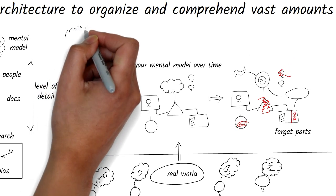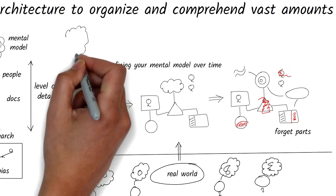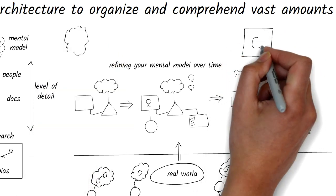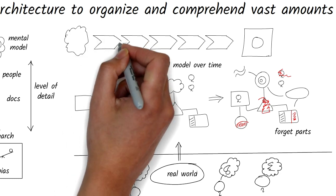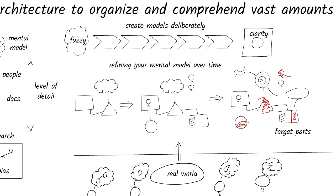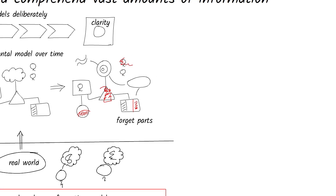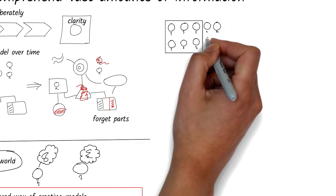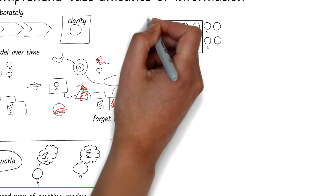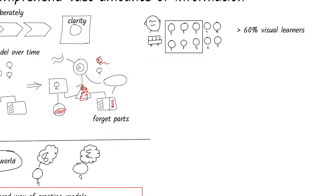What if there was a deliberate way to create these mental models? Then the task becomes easier, it brings clarity, and it becomes easy to communicate, which ultimately helps to drive organizational change. One excellent way to do this is through visuals. More than 60% of us are visual learners, and yet we hardly use the most powerful tool we have at our disposal.